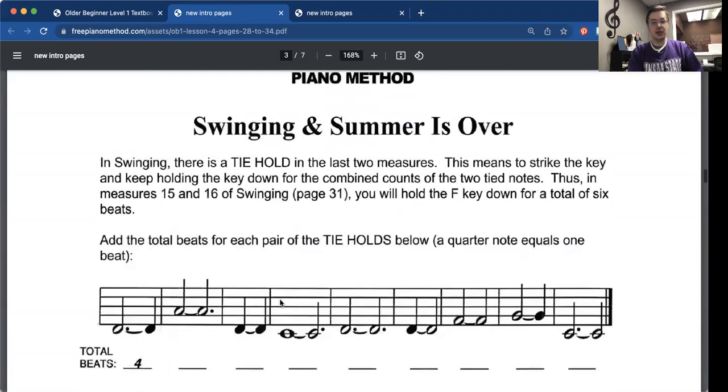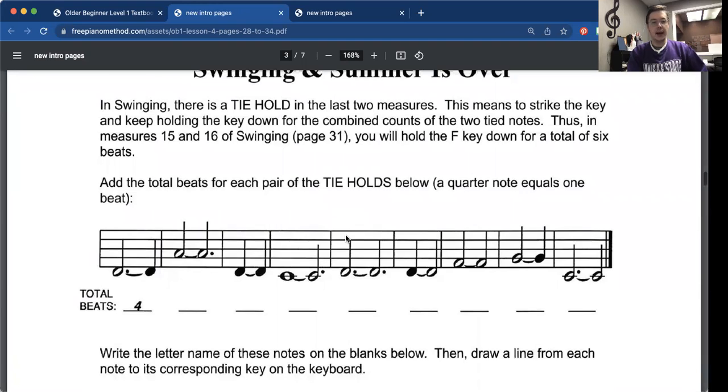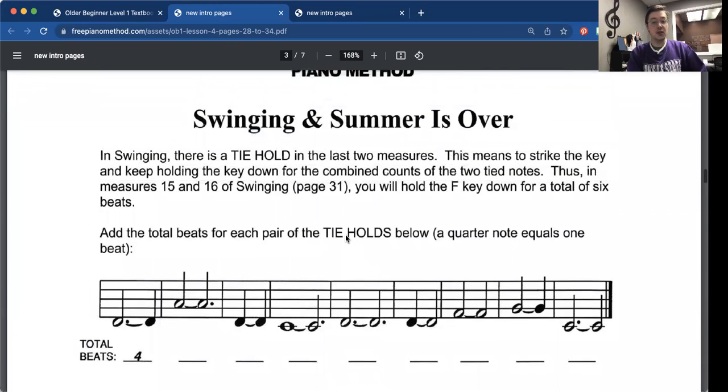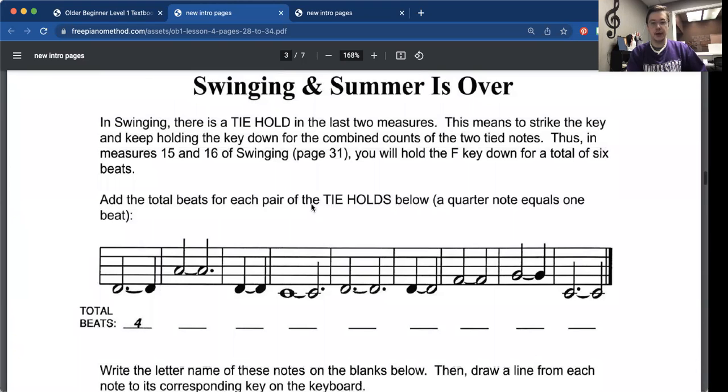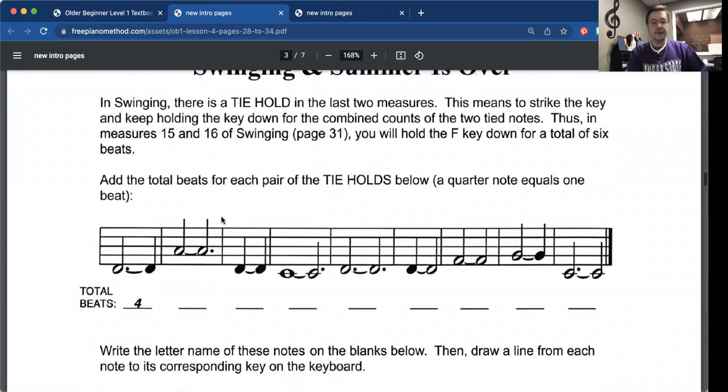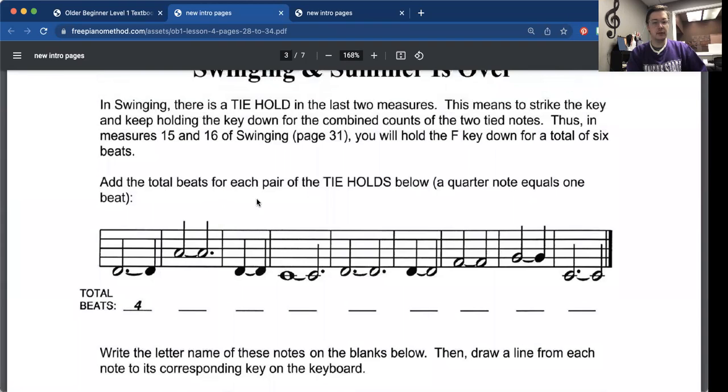On the next page here, swinging and summer is over will be two separate videos for this one. But we're going to start off this page here by doing a little bit of math. We're going to be reviewing the tie holds. If you remember, tie hold is when we combine two notes together and we play it for that total number of beats. So for example, when we have the dotted half note plus the quarter note, that would be equal to four. If you want to pause the video, go through and answer these, and then we'll come back and answer them together.